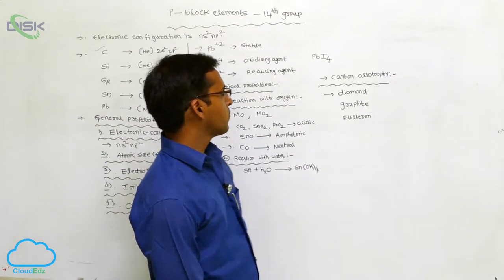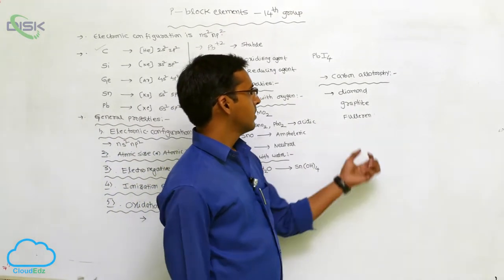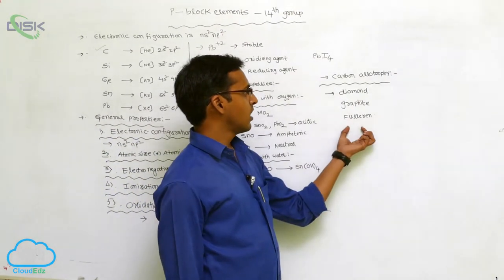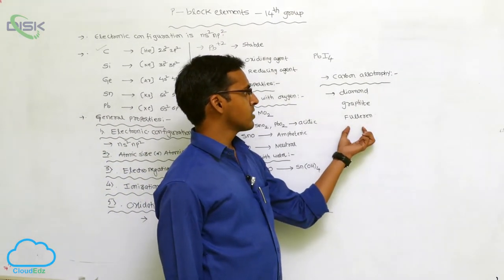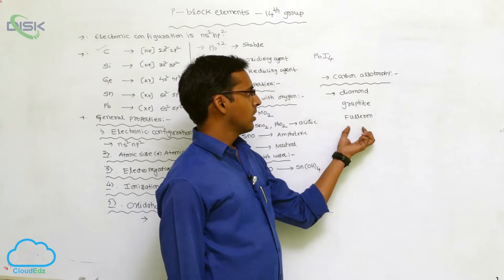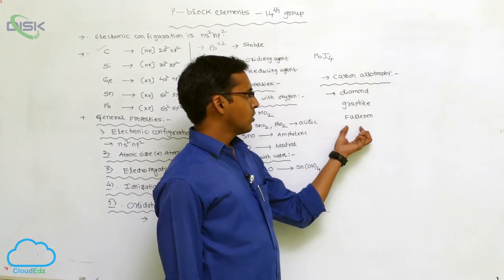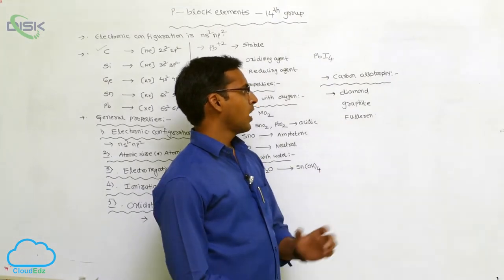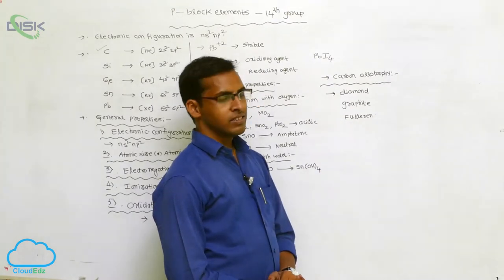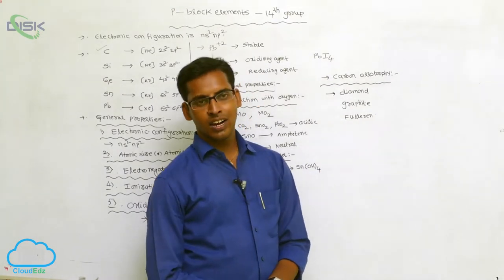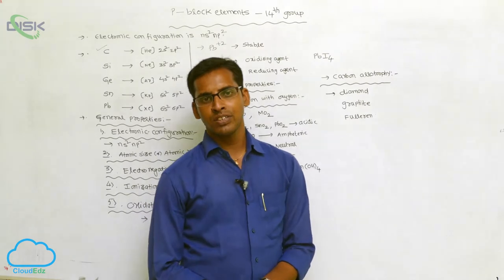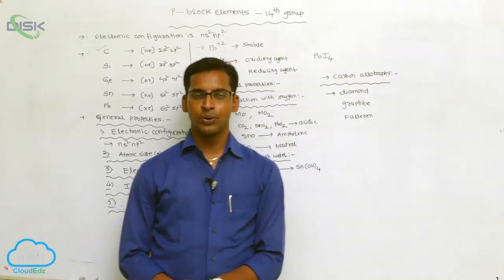Allotropic forms of carbon. These allotropic forms are two types: one is crystalline allotropy, and the next one is amorphous allotropy.